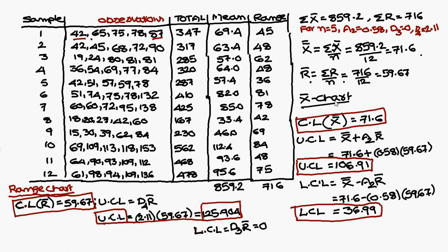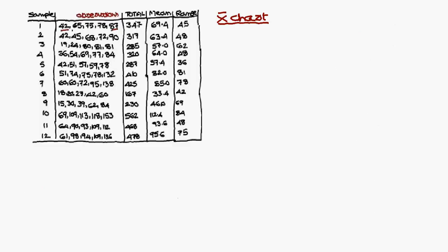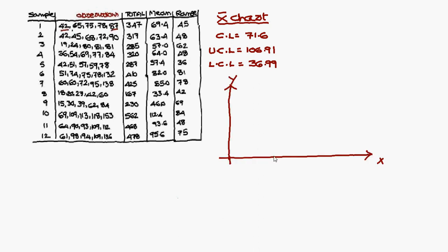Now we draw the diagrams. For the X-bar chart, the control line is 71.6, upper control line is 106.9, and lower control line is 36.9. On the X-axis, place the sample points 1 to 12. On the Y-axis, plot the X-bar (mean) values.